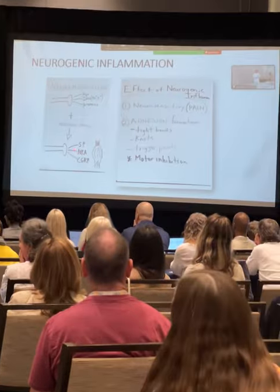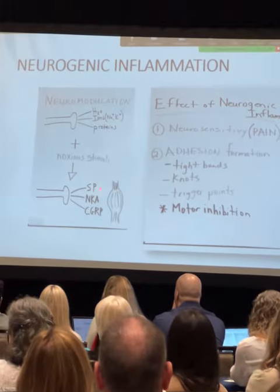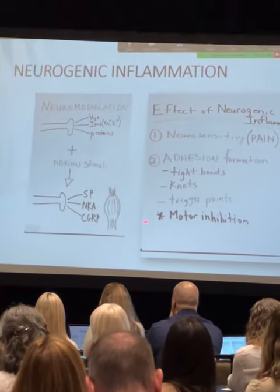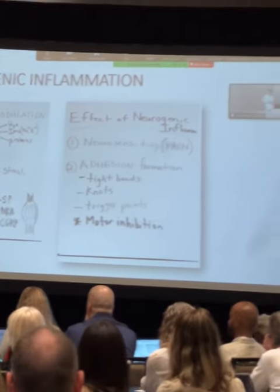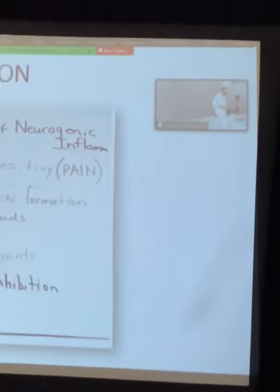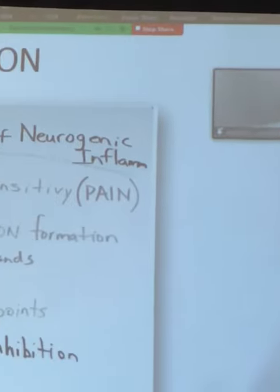Neurogenic inflammation is going to be released from substance P, neurokinin, calcium, protein, and gene-related peptides. It's not important what they are — it's important that we know they exist.